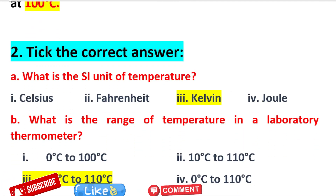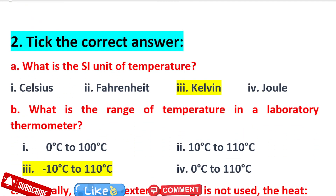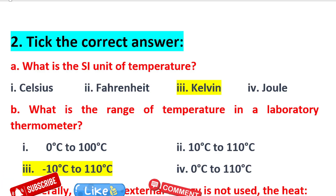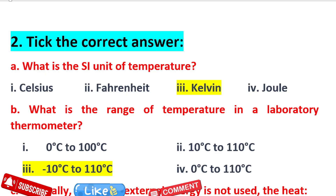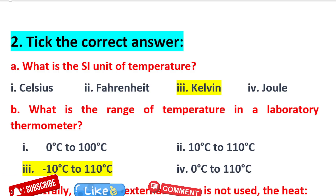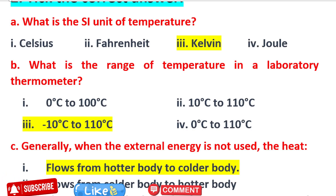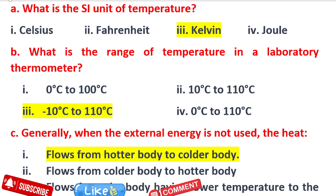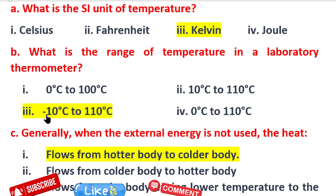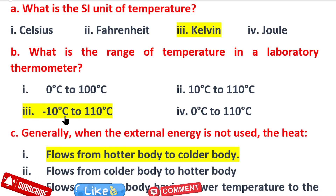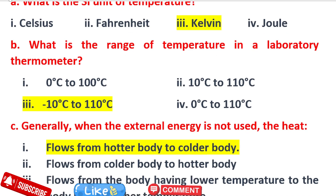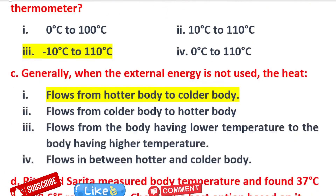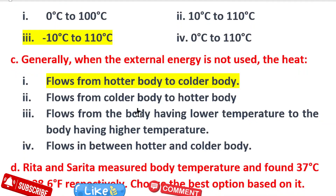Now question 2 — tick the correct answer. Question 1: What is the range of temperature in a laboratory thermometer? The right answer is minus 10 degrees centigrade to 110 degrees centigrade.